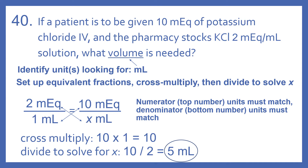So if we solve this, that will tell us how many milliliters we need to have 10 milliequivalents. If we cross multiply, 10 times 1 is 10, then divide to solve for X — divided by 2. So 10 divided by 2 is 5. So 5 milliliters is how much we'll need.